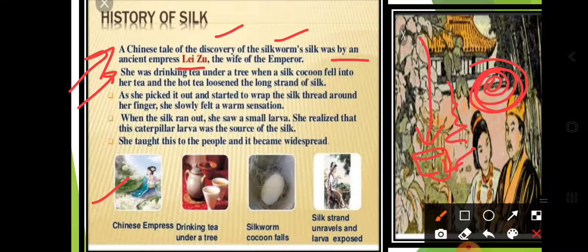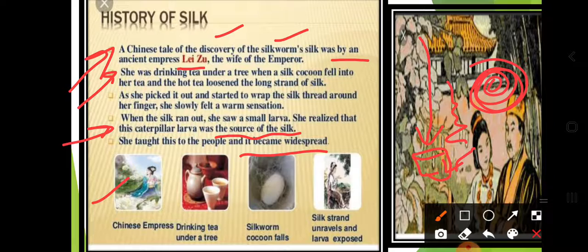She realized that the caterpillar larva was the source of the silk. She then taught this to all the people in the emperor's court and spread the knowledge that silk can be obtained from silk worms. This is the history of how Li Zu discovered silk.